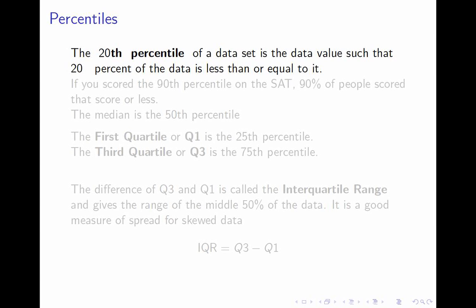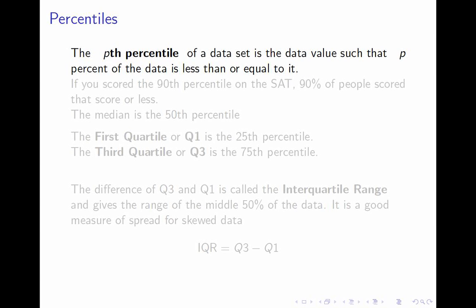Likewise, the 20th percentile is the data value such that 20% of the data is less than or equal to it, or more generally, the pth percentile is the data value such that p percent of the data is less than or equal to it.